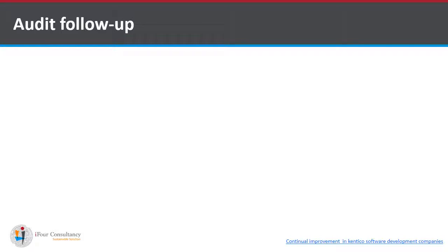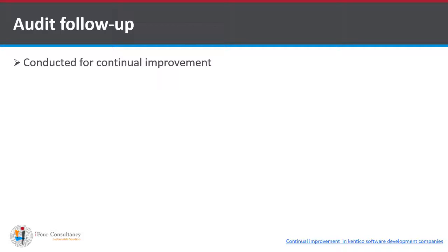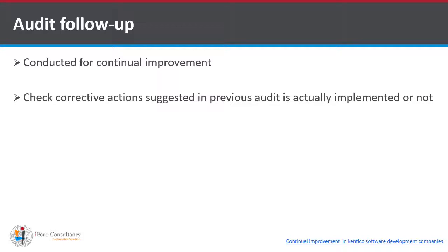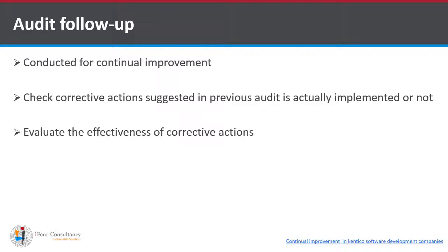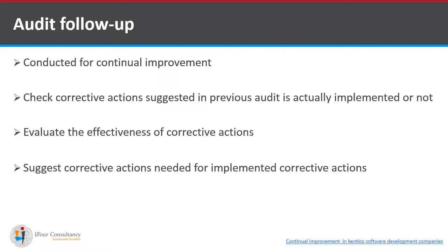Continual improvement can be monitored through audit follow-up. Audit follow-up is the auditing of corrective actions that were suggested in a previous audit. In an audit follow-up, the auditor checks whether corrective actions suggested in the previous audit have been properly implemented. It is conducted for continual improvement. The auditor then evaluates the effectiveness of those corrective actions and suggests further corrective actions that will be audited in the next audit follow-up.